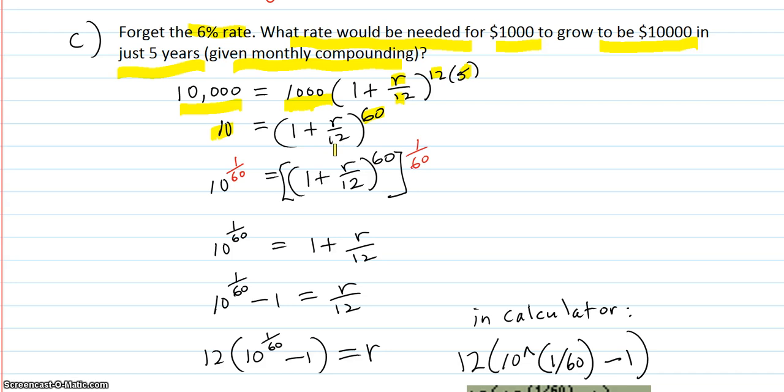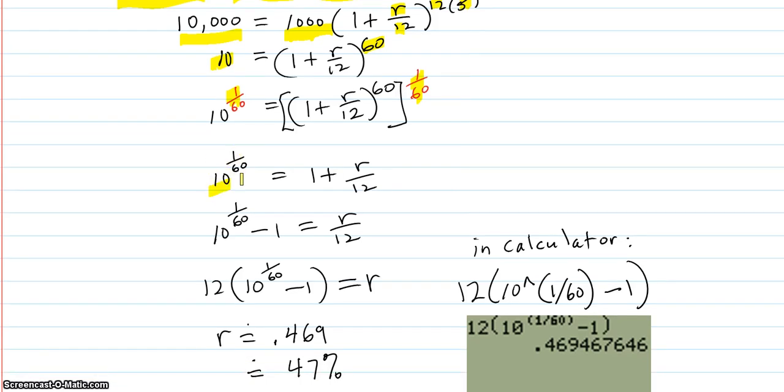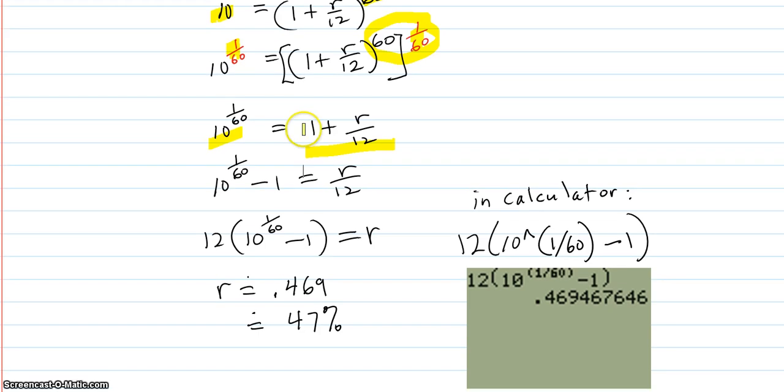Now we use that rational exponent trick that we've used before. Raise both sides to the 1/60th power. These two sides are equal. So if we raise it to the 1/60th power, they should be equal. Then we just keep that as 10 to the 1/60th. The 1/60th times 60 cancels out. And we just get 1 plus r over 12.